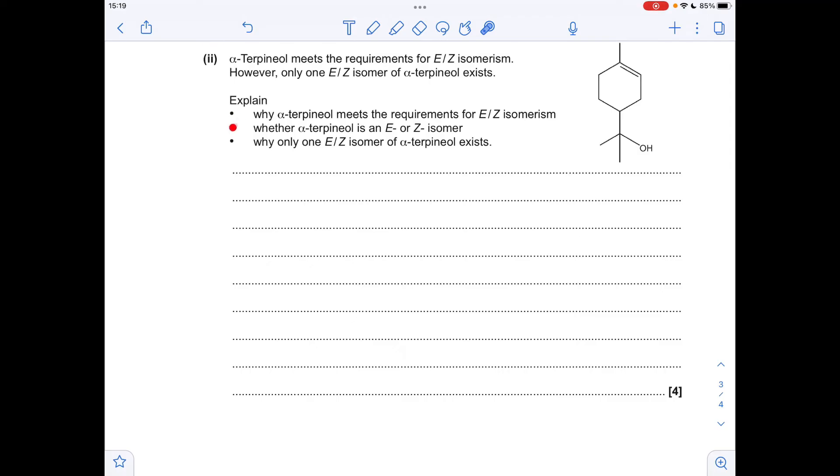So for the next part, I'll take each of the bullet points in turn. So why does this chemical meet the requirements for E/Z isomerism? Well, it's got a carbon-carbon double bond, and each carbon atom of the double bond is bonded to different groups. So we've got this methyl group here, then we've got this CH2 group here. This carbon here has got hydrogen on and a CH2, so different again.